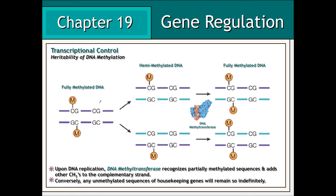For example, the methylation of DNA can be passed from one cell generation to another. During DNA replication, an enzyme known as DNA methyltransferase will recognize partially or hemimethylated DNA strands and therefore will add methyl groups to corresponding loci on the new complementary strand. Therefore, the methylation within a given region of the DNA molecule is preserved from one generation to the next.